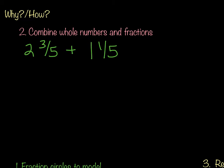So let's take a look at the same equation, but a different method. This time we're going to combine the whole numbers and then the fractions. So my first whole number is 2, and my other whole number is 1. So basically I'm going to do 2 plus 1, which is going to give me 3.